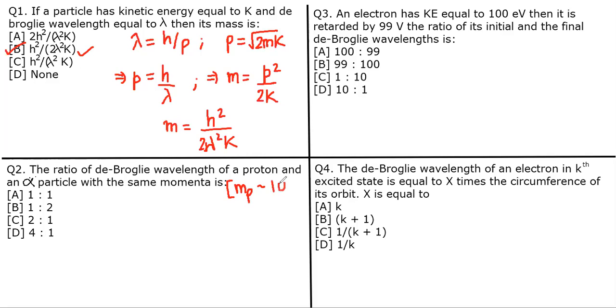But read the question carefully - they have the same momentum. We know that de Broglie wavelength is λ = h/p. If momentum is the same, then nothing can be different. So the ratio is 1:1, meaning λ_proton = λ_alpha.